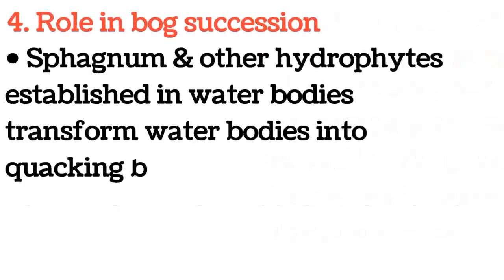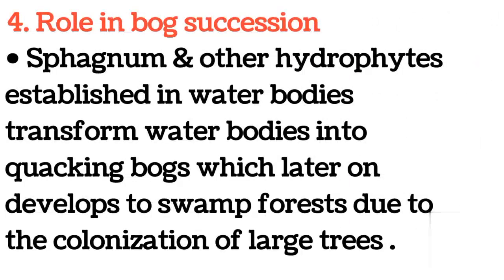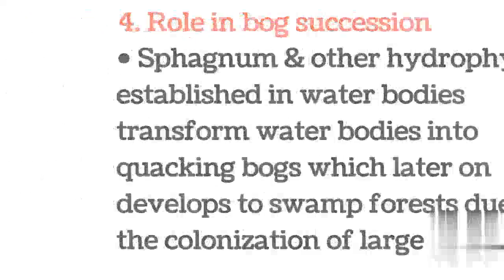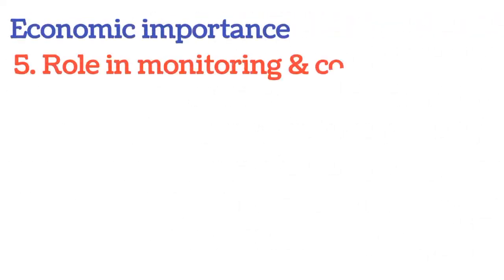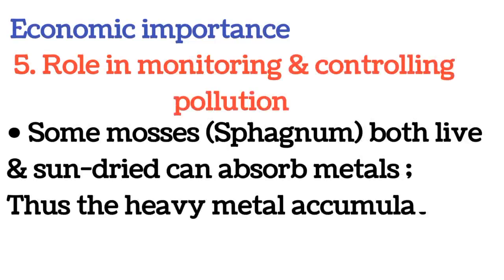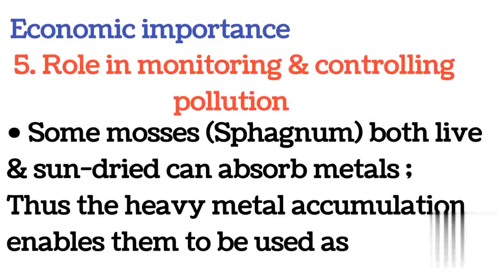Four: role in bog succession. Sphagnum and other hydrophytes established in water bodies transform those water bodies into quaking bogs, which later develop into swamp forests due to the colonization of large trees. Economic importance.